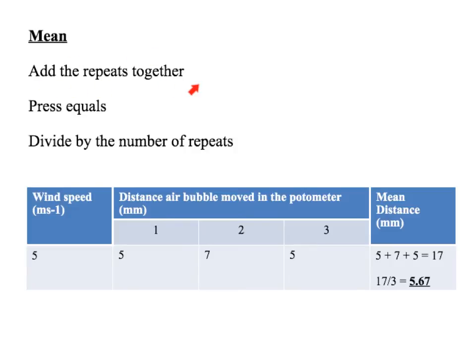You add the repeats together — do not just divide by the number of repeats straight away. Press equals first, otherwise you'll divide only the last number by the number of repeats. So add them up, press equals, then divide by the number of repeats. We've got three repeats: five, seven and five. Add them up, press equals — that gives 17. Divide by the number of repeats gives 5.67.